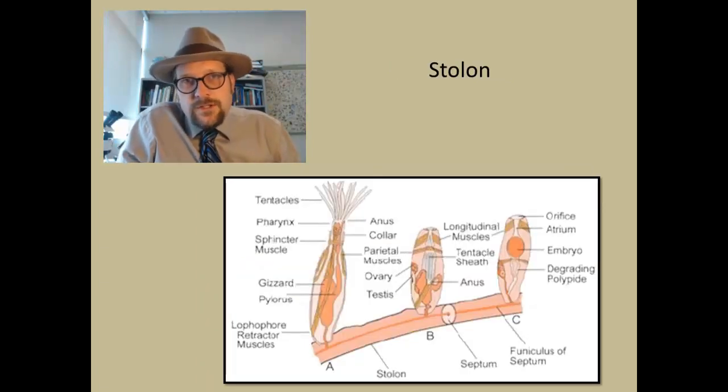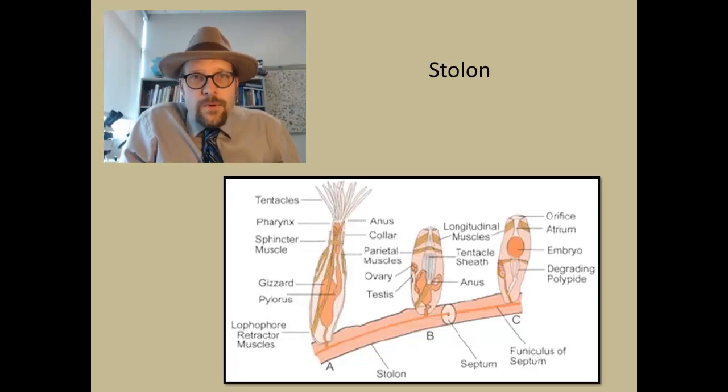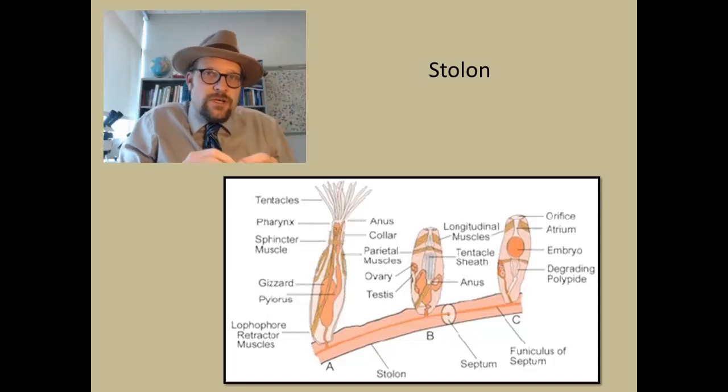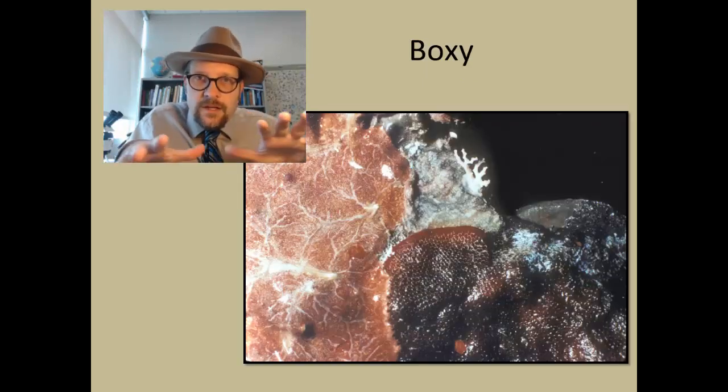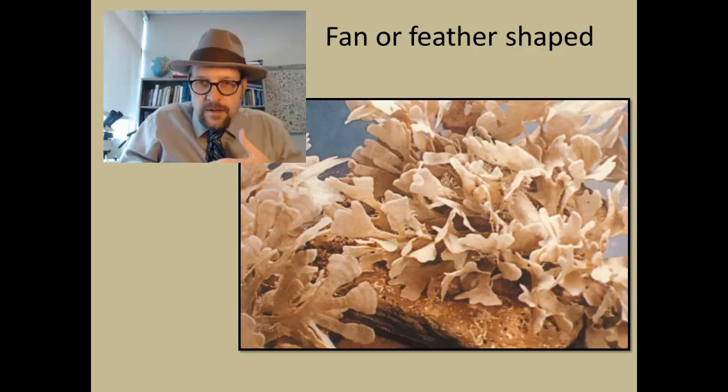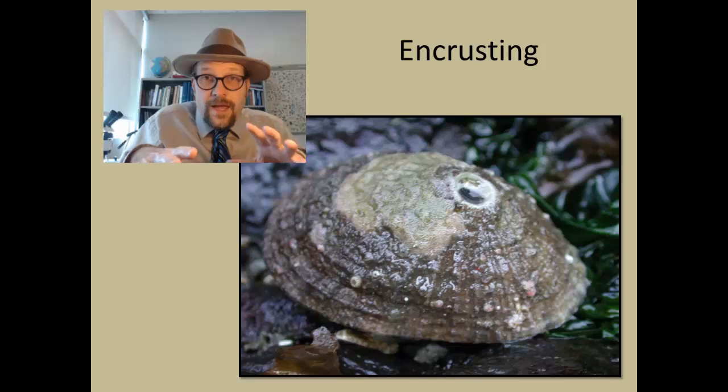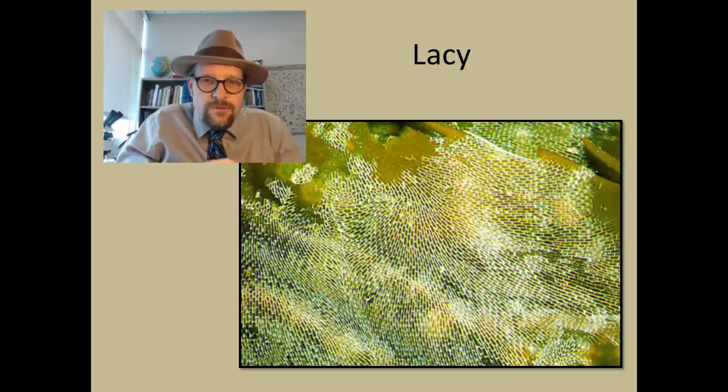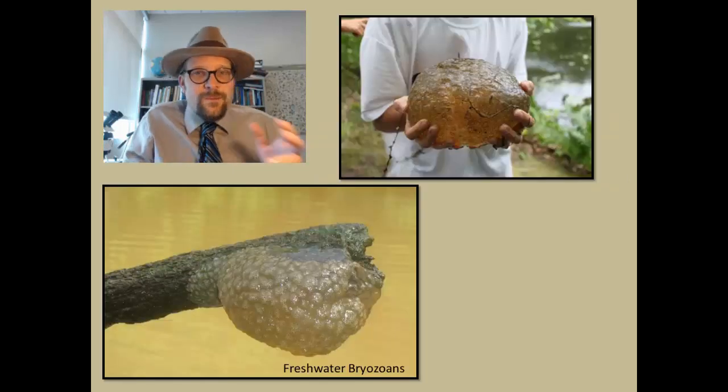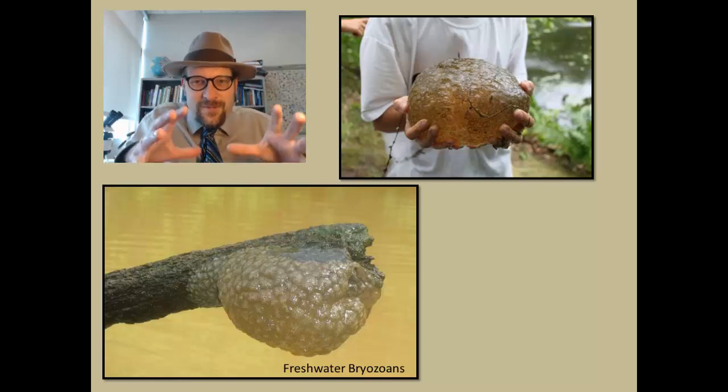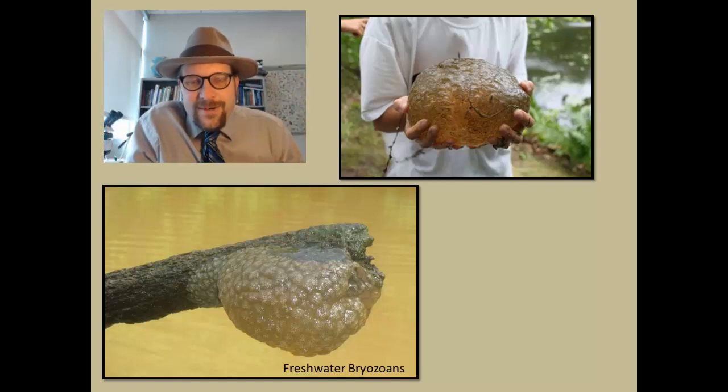Bryozoans grow in close association with each other, often connected by the structural walls of the zooecium, or like in the case of Bowerbankia, a stolon, which is a branching structure somewhat resembling branches on a plant. Growth in bryozoans can be boxy in shape, they can form fan or feather shapes, they can be encrusting, they can grow on other animals, plants, or even hard rocks. They can form pretty lacy textures as they grow out, secreting a calcium carbonate skeleton of calcite. Sometimes in freshwater bryozoans, they form these big gelatinous balls that are found in freshwater rivers and ponds of colonies of bryozoans.